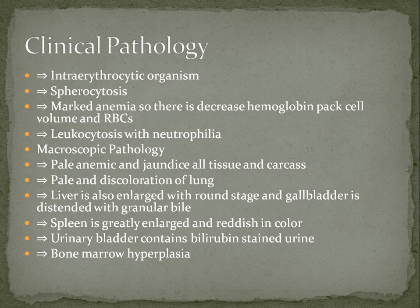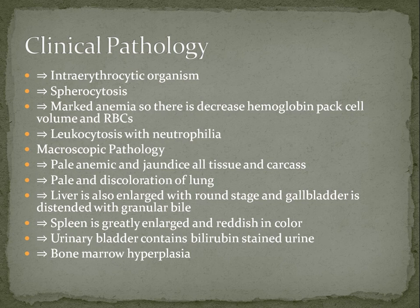To talk about macroscopic pathology after post-mortem: we will see pale, anemic, and jaundiced tissues throughout the carcass. There will be pale discoloration of the lungs; the liver is enlarged with rounded edges; the gallbladder is distended with granular bile; the spleen is greatly enlarged and reddish in color; the urinary bladder contains bile-stained urine; and bone marrow hyperplasia is seen.